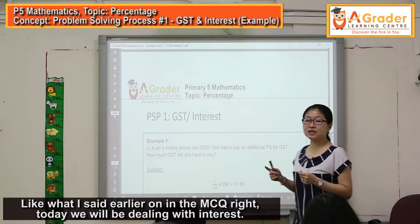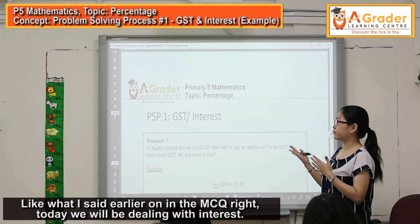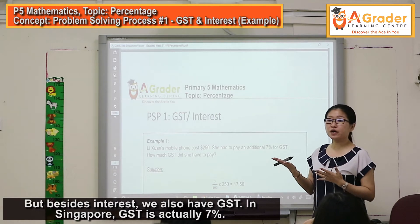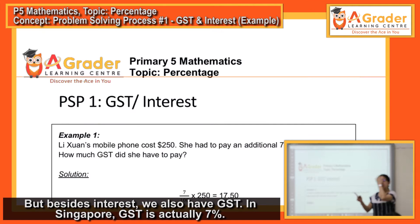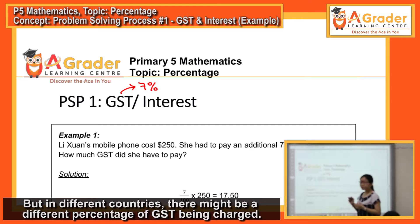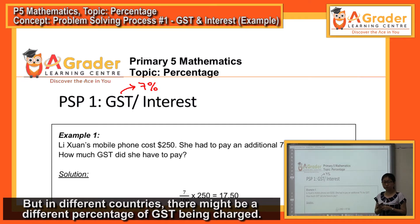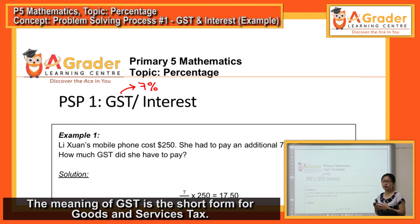Let's look at the first PSP. Like I said earlier in MCQ, today we'll be dealing with interest. But besides interest, we also have GST. In Singapore, GST is actually 7%, but in different countries there might be a different percentage of GST being charged. The meaning of GST is the short form for goods and services tax.